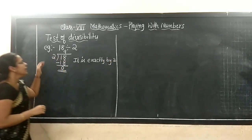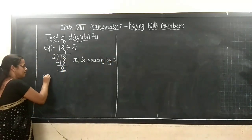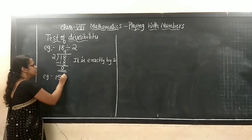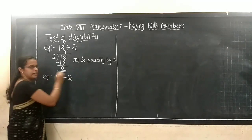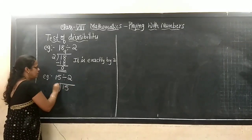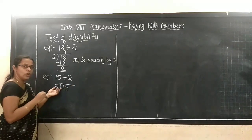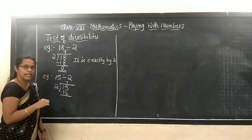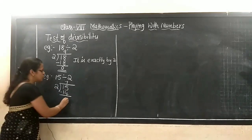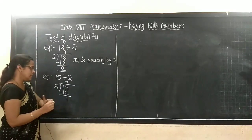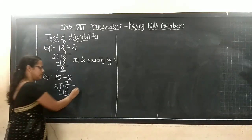If I take one more example: 15 divided by 2. 15 by 2 — 2 sevens are 14. 15 minus 14 is 1. If a remainder remains, then it is not divisible.